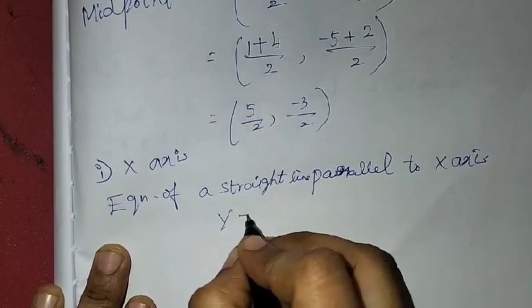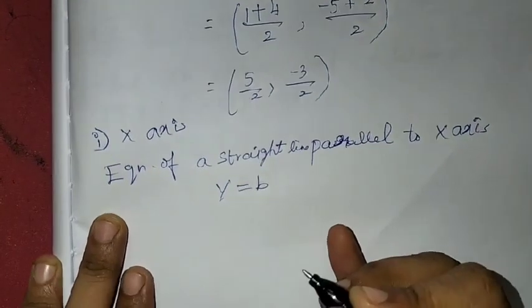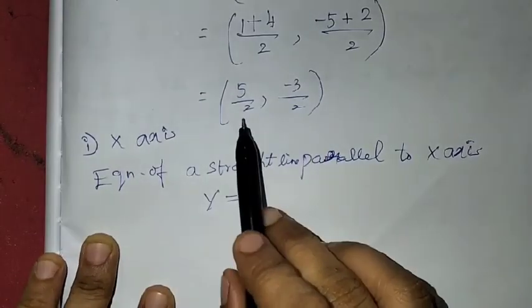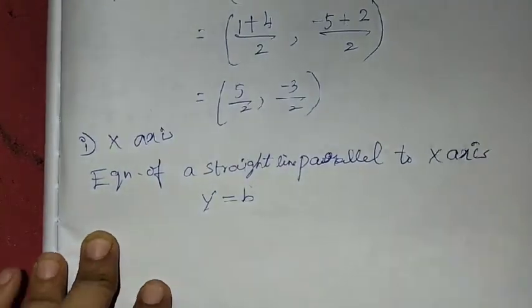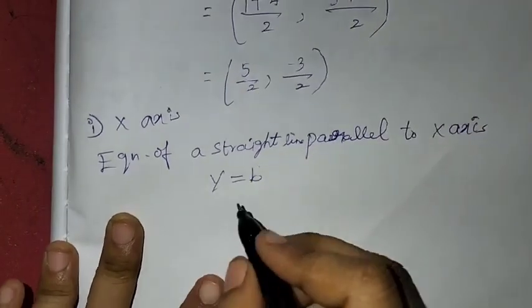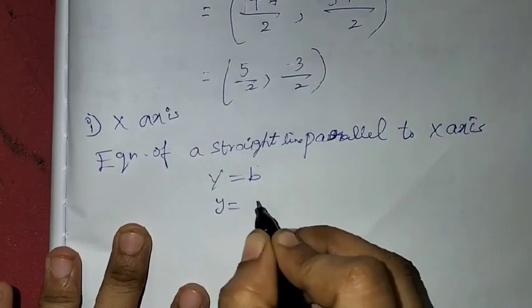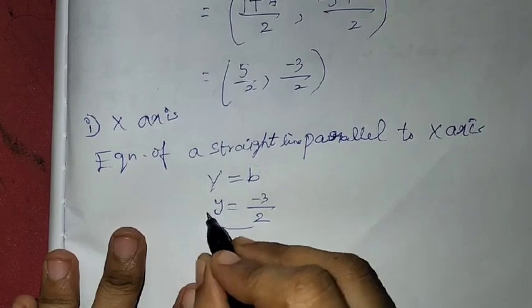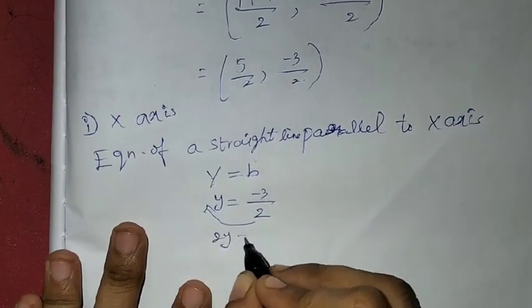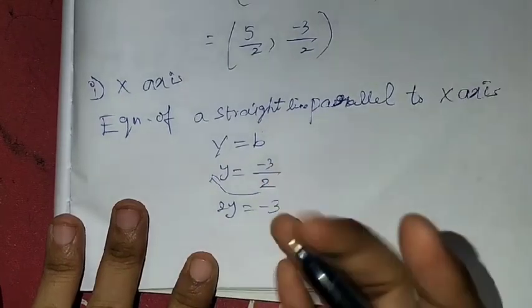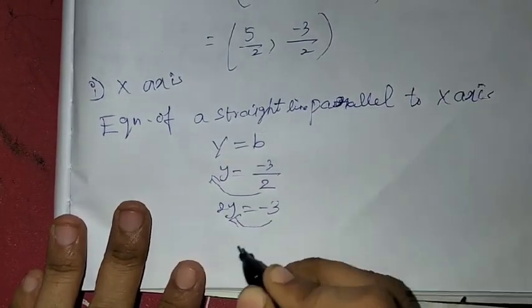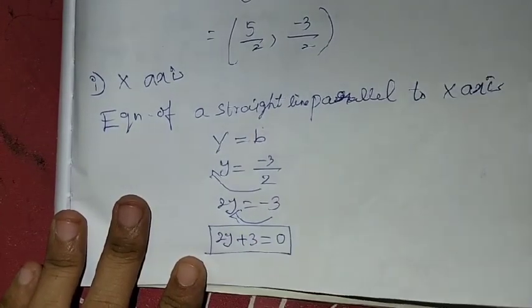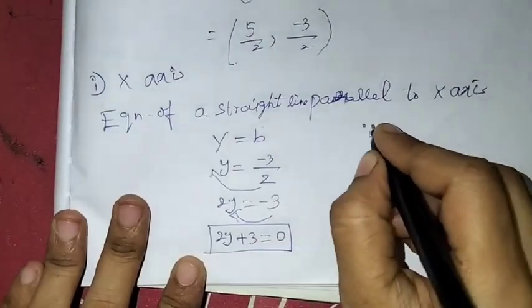So, the equation of a straight line parallel to x-axis is y = b, and that b is nothing but -3/2, the y value. We substitute y = -3/2. The 2 will go to the other side and multiply, giving 2y = -3. Then -3 comes to the left-hand side and becomes +3. So, 2y + 3 = 0. This is the equation parallel to x-axis.